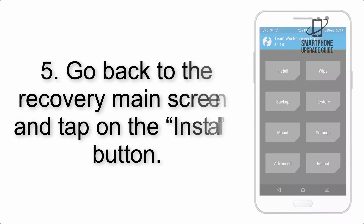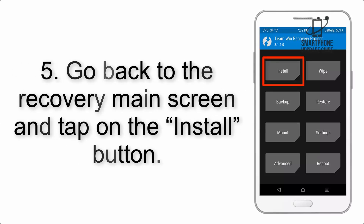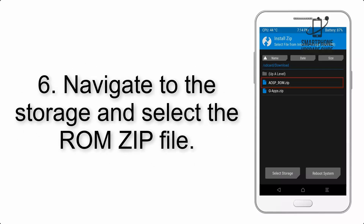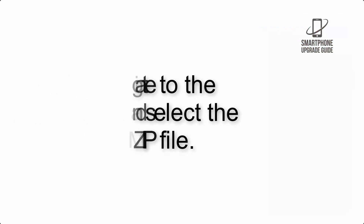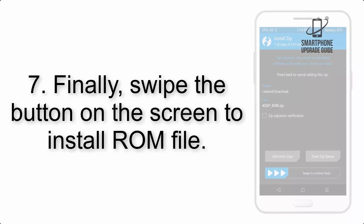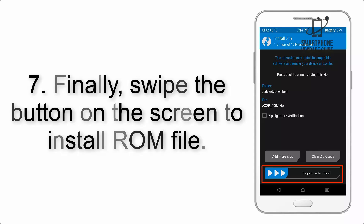Step 4: Swipe the button to wipe the device. Step 5: Go back to the recovery main screen and tap on the Install button. Step 6: Navigate to the storage and select the ROM zip file.